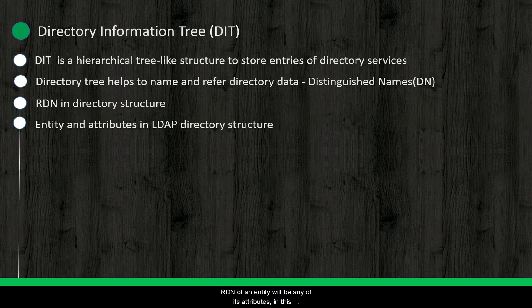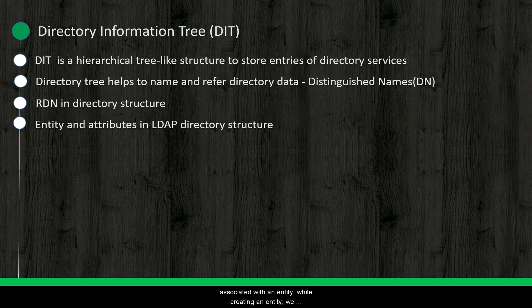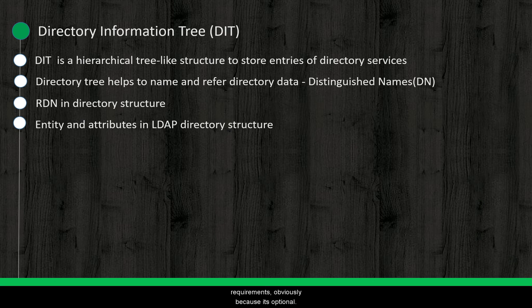An RDN of the entity will be any of these attributes. In this example, the student name attribute could be the RDN. There are optional attributes and mandatory attributes associated with an entity. While creating an entity, we should make sure that all mandatory attributes are passed to the entity, and optional attributes can be passed based on the requirement.